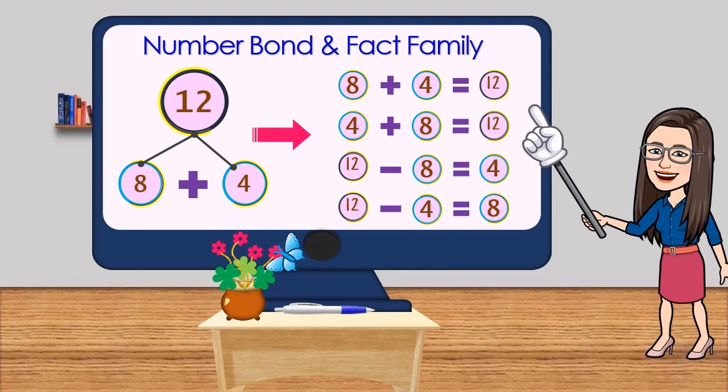Another example: the numbers that bond to 12 are 8 and 4, so we can combine 8 and 4 to make 12. Then its corresponding fact family are: 8 plus 4 equals 12, 4 plus 8 equals 12. In reverse, 12 minus 8 equals 4, and 12 minus 4 equals 8.